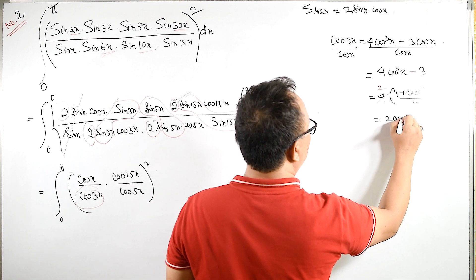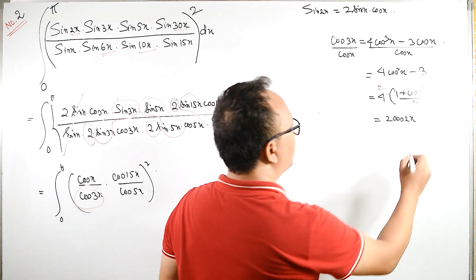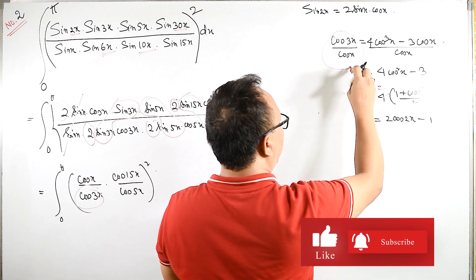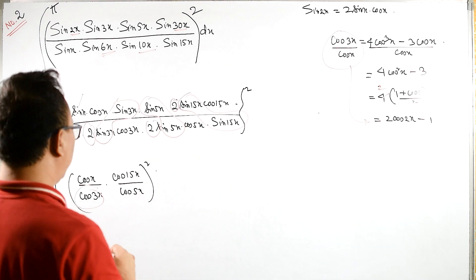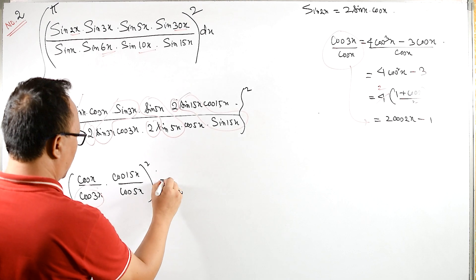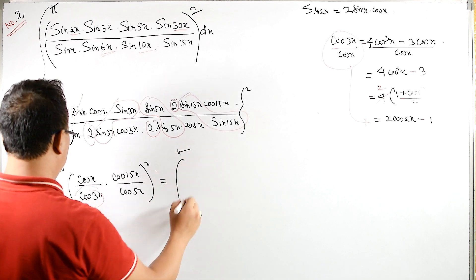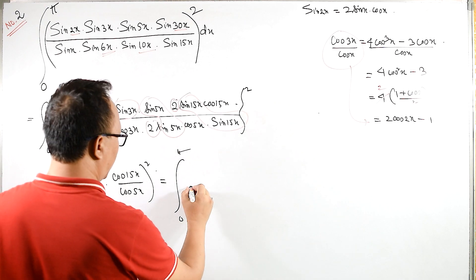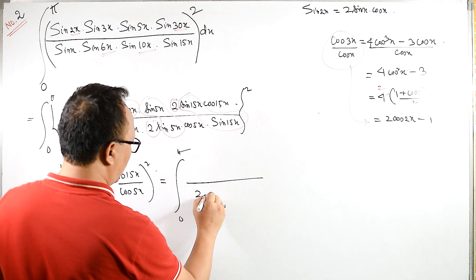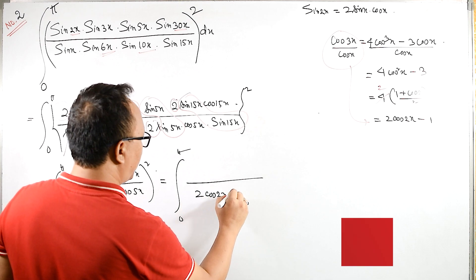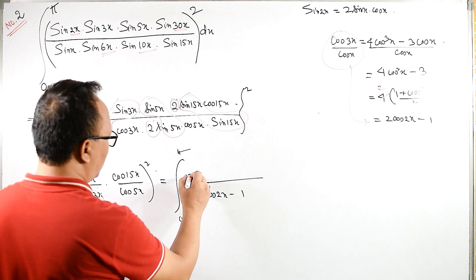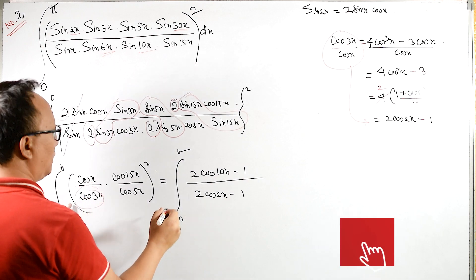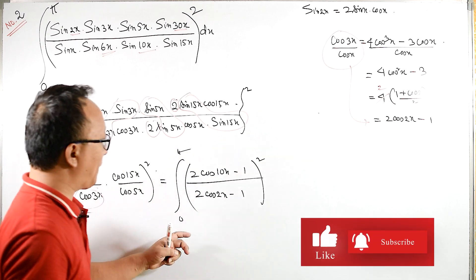Here 2 minus 3 is minus 1, so therefore instead of cos 3x upon cos x I can write: 2 cos 2x minus 1. So from 0 to π, cos 3x upon cos x equals 2 cos 2x minus 1. This means it will go in the denominator, so I write 2 cos 2x minus 1.